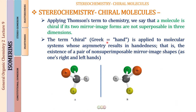The term 'chiral' comes from a Greek word meaning 'hand.' This is applied to molecular systems whose asymmetry results in handedness. The carbon here has four different groups surrounding it — this is an asymmetrical molecule, which has resulted in handedness. One looks like my right hand, the other like my left hand. What I get is a pair of non-superposable mirror image shapes — compound A and compound B, both non-superposable mirror images of each other.